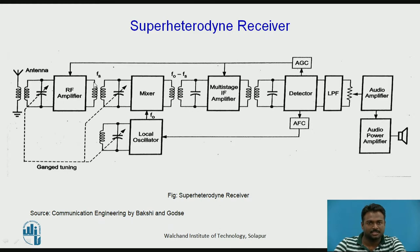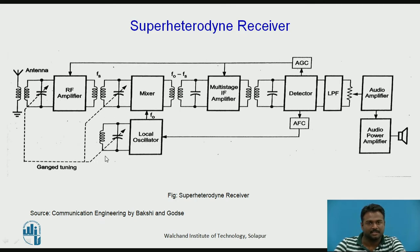The mixer also receives an input from the local oscillator, frequency F0. Let us call the received signal frequency FS. The local oscillator frequency is maintained in sync such that the mixer produces a constant output at all times. If the received signal frequency changes, the local oscillator frequency must change accordingly — that is why they are mechanically linked. The mixer accepts both FS and F0 and produces the difference frequency, F0 minus FS, which is called the intermediate frequency.